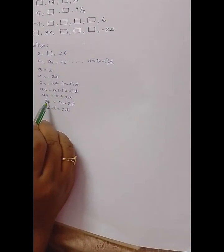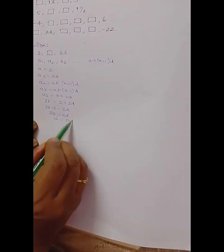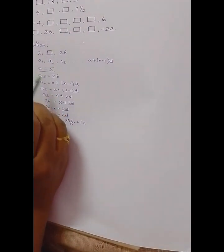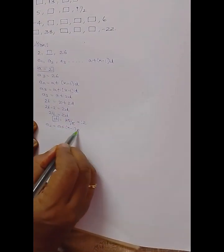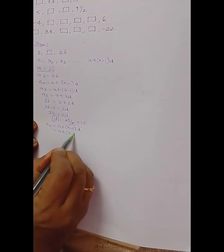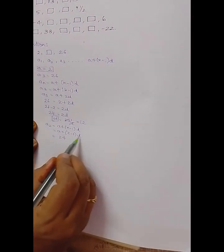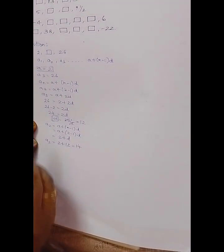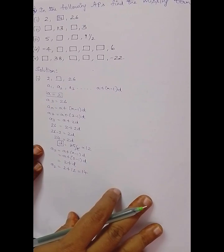a is the first term: 2 plus 2d = 26 (since a3 = 26). So 26 minus 2 equals 2d, giving us 24 = 2d, therefore d = 12. Now to find a2: a2 = a + (2-1)d = 2 + 1×12 = 2 + 12 = 14. So the second term is 14. We fill in the box with 14.